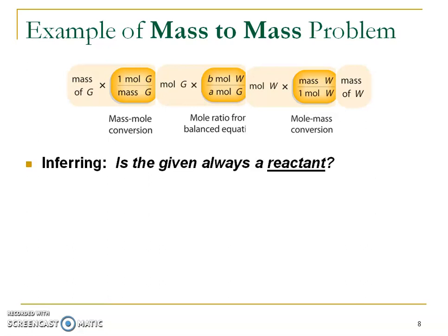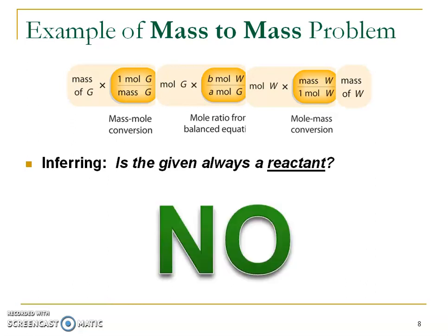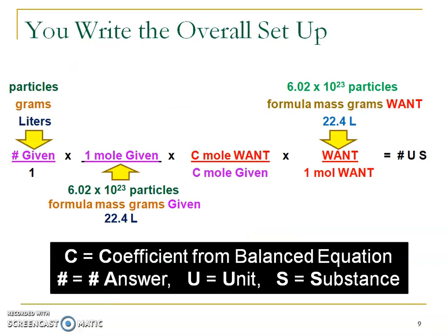Is the given always going to be a reactant? No. There are also different combinations — we can go from reactant to product, product to reactant, or even ask: if I have this much reactant, how much of another reactant am I going to need? So it might be between two reactants. There's a spot in your notes to write up the whole setup so you understand: here's what we start with, these are our three conversions, this is our answer. When it says formula mass, this is the formula mass of what's given versus the formula mass of what we want.